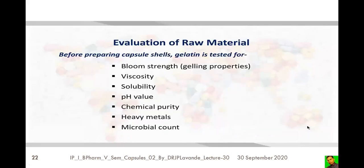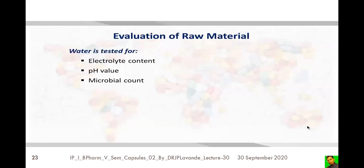Different grades of gelatin are based on bloom strength — the gel-forming capacity of gelatin. Evaluation tests for raw gelatin include bloom strength, viscosity, solubility, pH, chemical purity, heavy metals presence, and microbial count.